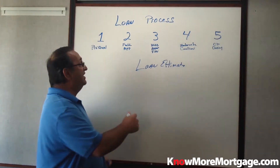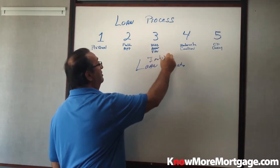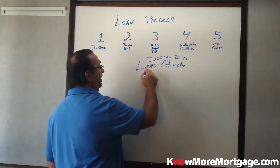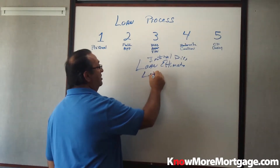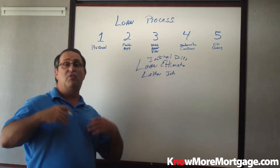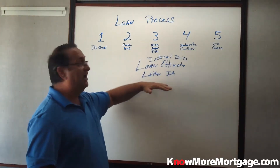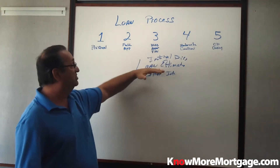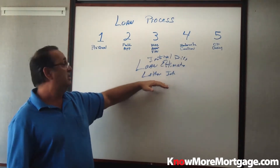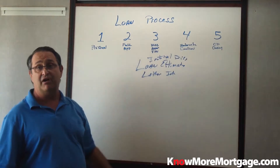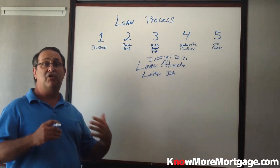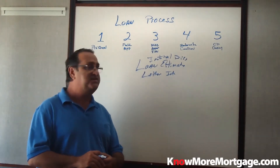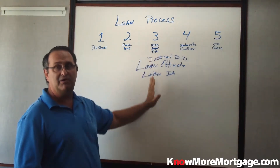Make sure that information is correct — still acknowledge it so you can move forward. Inside your initial disclosures, along with your loan estimate, is a thing called a letter of intent. We want to know if you want to proceed with this loan. After you've reviewed it, you've got to sign off. This loan is frozen — no one can move forward until you acknowledge the loan estimate and sign that. It's an electronic signature. There are going to be a lot of other disclosures in there, like Equal Credit Opportunity Act disclosures, to make sure you understand your rights to be treated fairly and honestly.